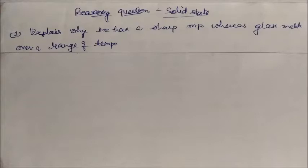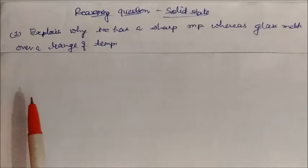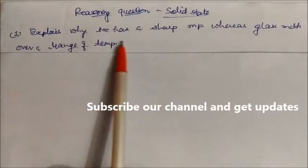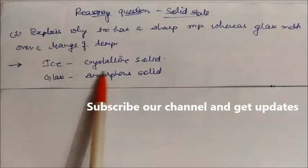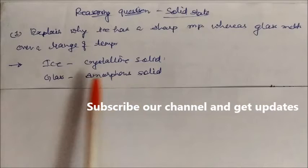Welcome to India session. In this session we will see the reasoning questions based on solid state. The first question: explain why ice has a sharp melting point whereas glass melts over a range of temperature. Ice has a sharp melting point because it is a crystalline solid, and crystalline solids always have a sharp melting point. Glass is an amorphous solid, that's why it melts over a range of temperature.